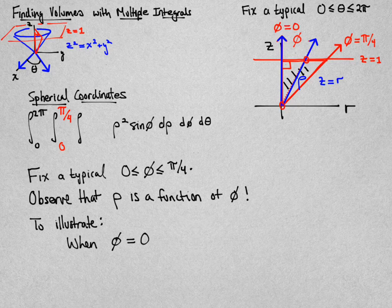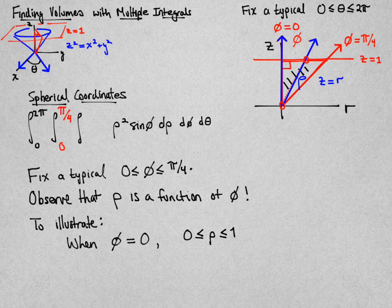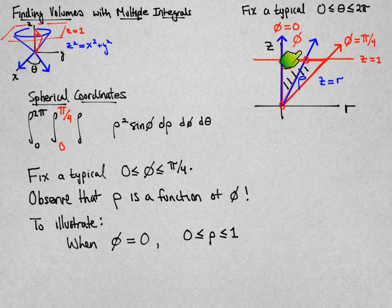To illustrate this point, consider the case when phi is equal to 0. That's when the angle is along the z-axis. In this case, your rho will go from 0, walk along the z-axis until you get to the height of the red plane, which is z equal to 1, so rho goes between 0 and 1.